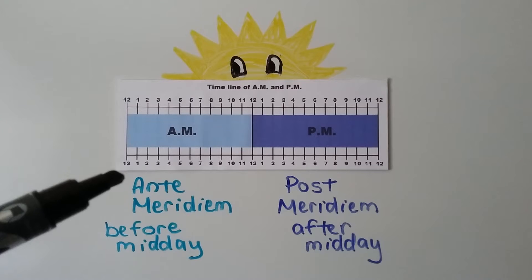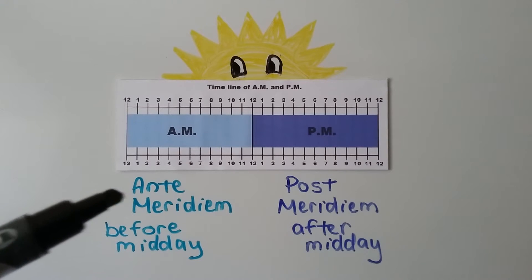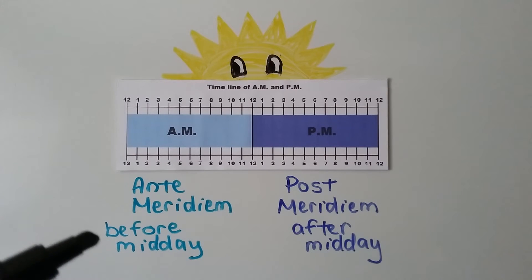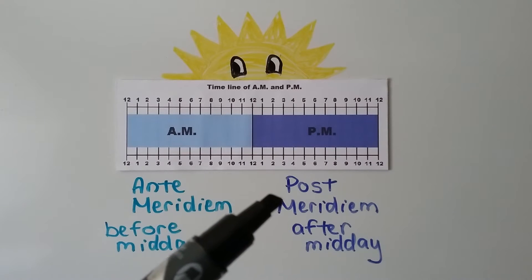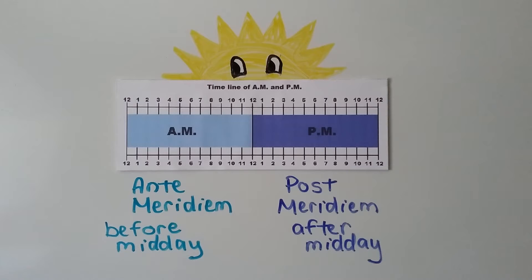AM stands for ante meridiem. That is Latin for before midday. It's a Latin phrase. PM stands for post meridiem. That means after midday.